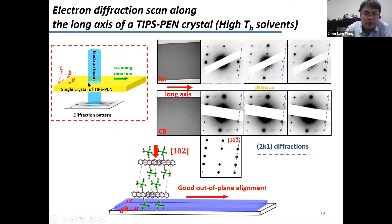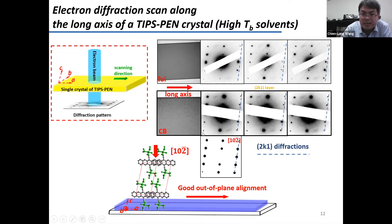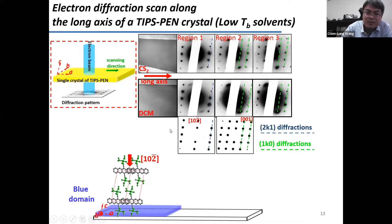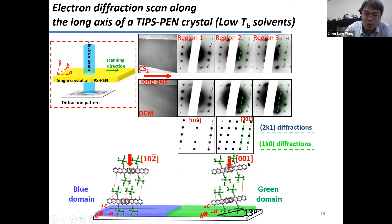To find these defects, we did further electron diffraction: we picked one crystal from the crystal array, placed it in a TEM, and used an electron beam to scan along the crystal, observing diffraction patterns from different areas. For crystals grown from high-boiling-point solvents, we only get one type of diffraction pattern, generated when the electron beam shoots along the 1 0 -2 bar zone axis of the lattice. But for crystals grown from low-boiling-point solvents, we see two types of diffraction patterns — one from the 1 0 -2 bar zone and a second only generated when the electron beam is along the 0 0 1 zone axis.